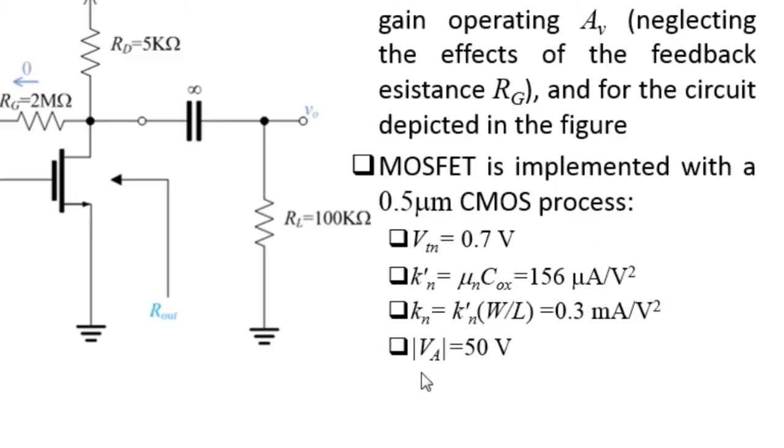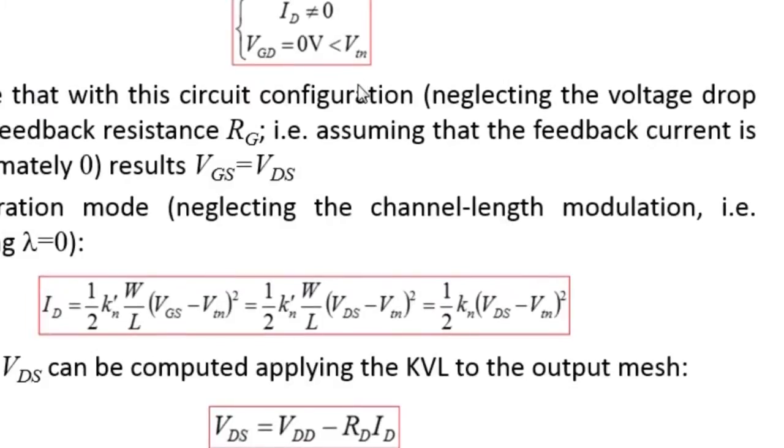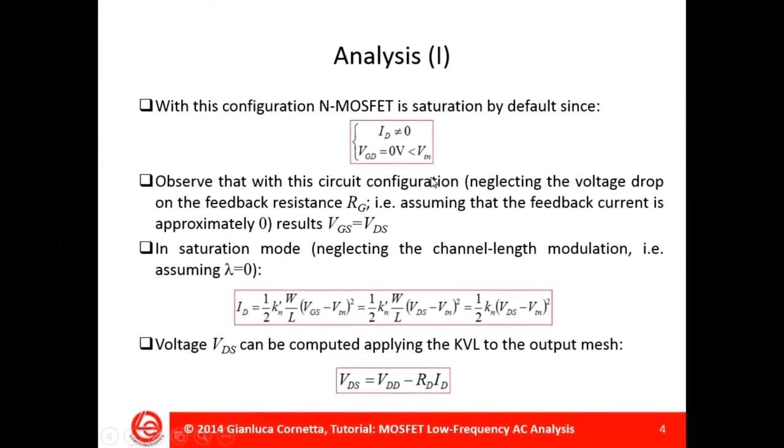And an early voltage VA equal to 50 volts. In my pencil and paper calculation I use a simple level 1 SPICE model. So with this model the drain current in saturation is given by the following equation, in which I am neglecting the channel length modulation effects.